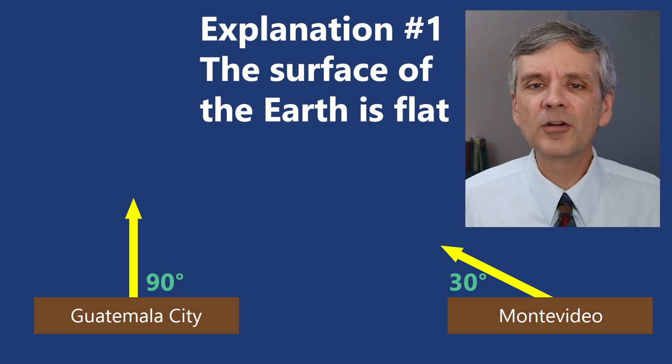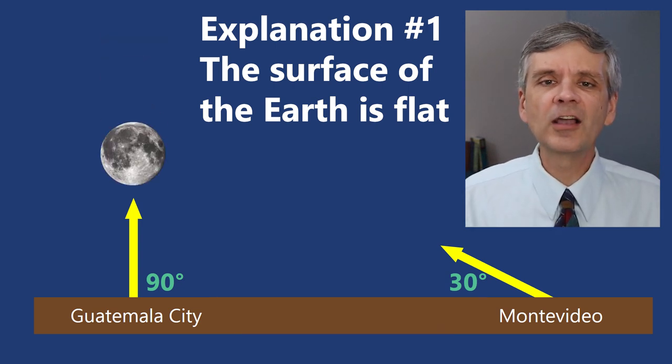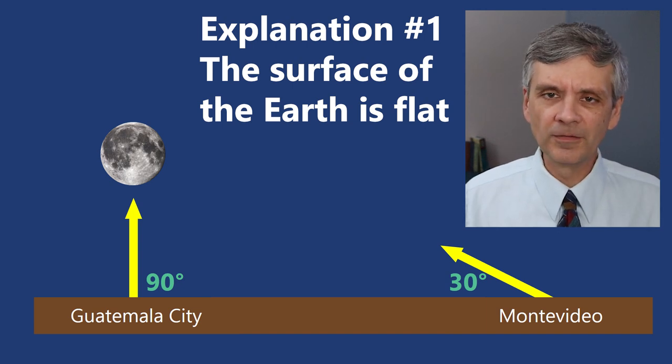One, the surface of the earth is flat and the moon is close enough such that the angles between the level ground and the line of sight to the moon are different.